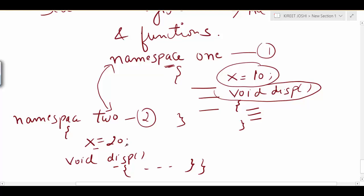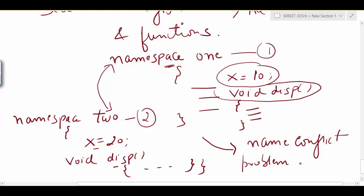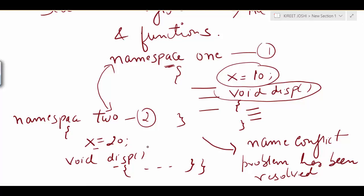The name conflict problem has now been resolved with the help of namespace. The variable x in namespace one is different from x in namespace two, and the 'disp' function in namespace one is different from 'disp' in namespace two, because we have created separate declarative regions. The calling mechanism uses the namespace name to differentiate which variable or function belongs to which namespace.